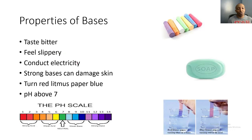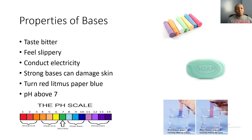The properties of bases: they taste bitter, feel slippery, conduct electricity, and strong bases can damage the skin. For example, hair relaxers or perms use a chemical called lye, which has a pH of 13, making it a very strong base. People who use hair relaxers over time risk the relaxer breaking their hair follicles, which can actually cause hair loss.